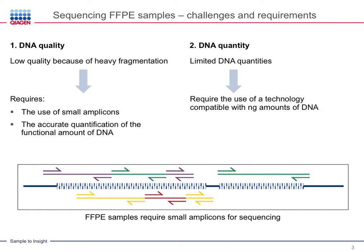While FFPE samples contain a wealth of information for the molecular characterization of diseases, especially cancer, two main challenges still exist for the NGS analysis of DNA extracted from FFPE samples: DNA quality and DNA quantity. Studies have shown that DNA extracted from FFPE samples is of low quality because of the heavy fragmentation that results from the preservation process. This heavy fragmentation restricts the use of DNA from FFPE samples — it requires targeted DNA sequencing as opposed to whole genome sequencing or whole exome sequencing, and requires the use of small amplicons to accommodate the fragmented nature of DNA.